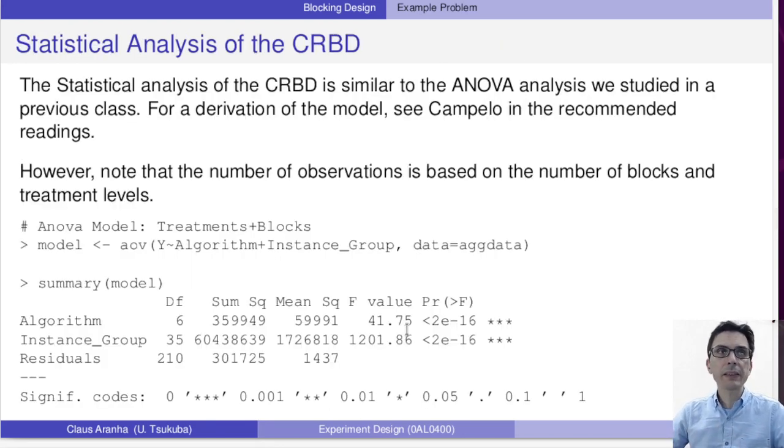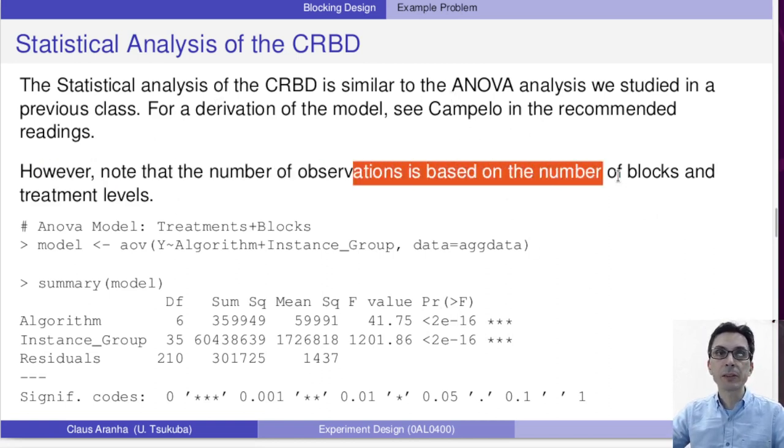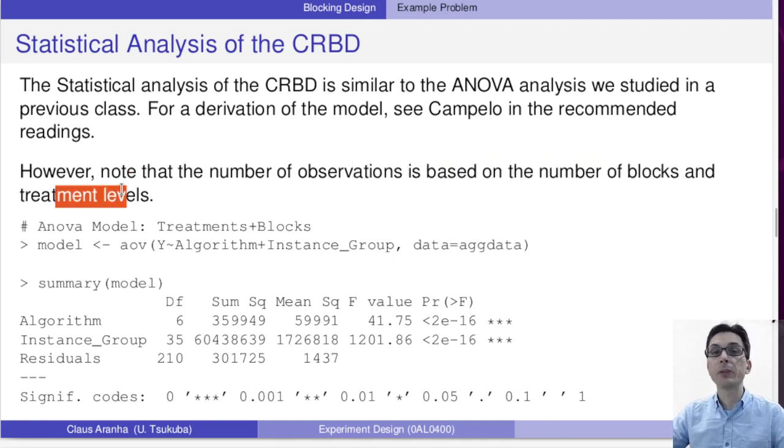Now, a statistical analysis of the CRBD is similar to the ANOVA analysis that we studied in the previous class. For the derivation of the model, see the link for Campello that has the full derivation of this model. We're going to just see the summary of the analysis here. Note that the number of observations is based on the number of blocks, this is very important, and the number of treatment levels.